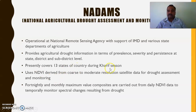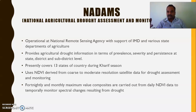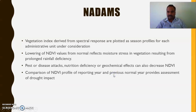Presently NADAMS covers 13 states of the country during the kharif season. It uses NDVI derived from coarse to moderate resolution satellite data for assessing and monitoring droughts. Fortnightly and monthly maximum value composites are carried out from daily NDVI data — daily NDVI data is taken and for every two or four weeks, maximum value composites are calculated, and then they monitor the spectral changes resulting from drought, giving information to state governments and district collectors.